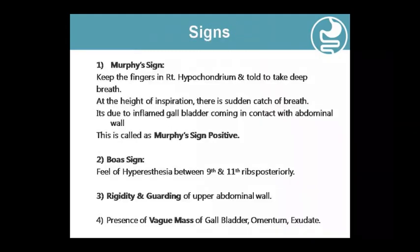Important clinical signs include Murphy's Sign and Boas Sign. For Murphy's Sign, place your finger on the right hypochondrium and press low. At the height of inspiration, the patient will have a sudden catch of breath because the inflamed gallbladder contacts the abdominal wall. This sudden arrest of inspiration is called Murphy's Sign.